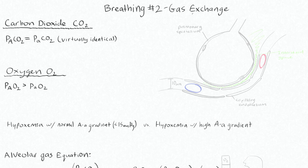We're going to talk about gas exchange in this video. First, let's talk about the functional unit of gas exchange in the lung, where your alveolus meets your pulmonary capillary network. This alveolus will have thin pulmonary epithelium — these are type 1 pneumocytes, which are the thin pneumocytes.